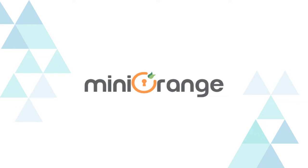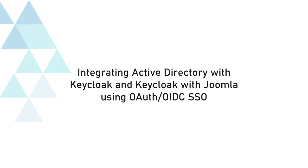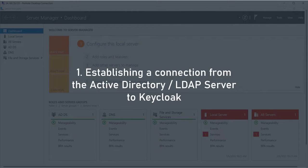Welcome to Mini Orange. To integrate the Active Directory with Keycloak and then to Joomla using OAuth OIDC SSO, we need to first establish a connection between the Active Directory and Keycloak, and then a connection from Keycloak to Joomla. First, let's connect the Active Directory and Keycloak.